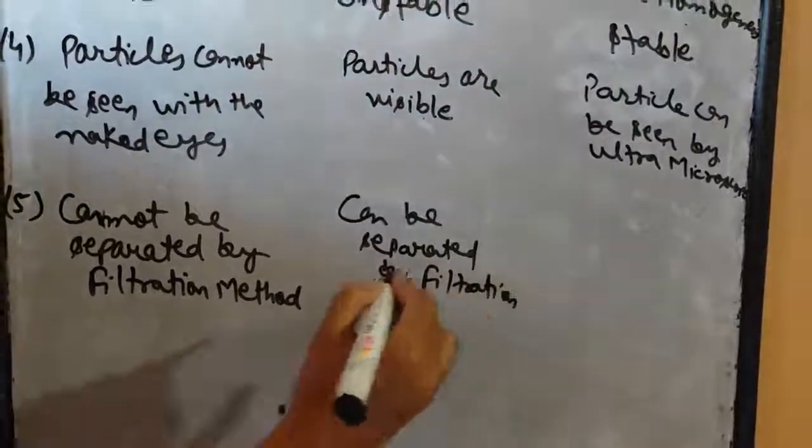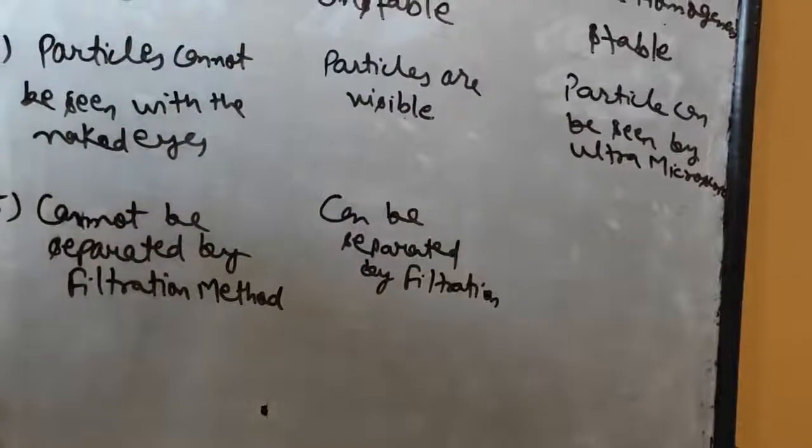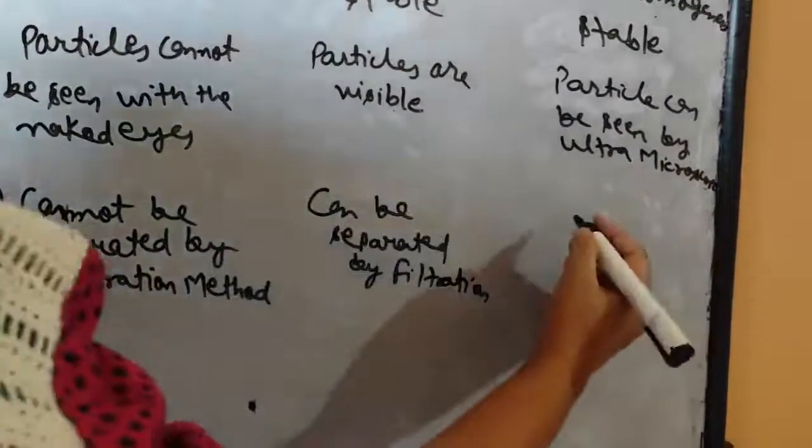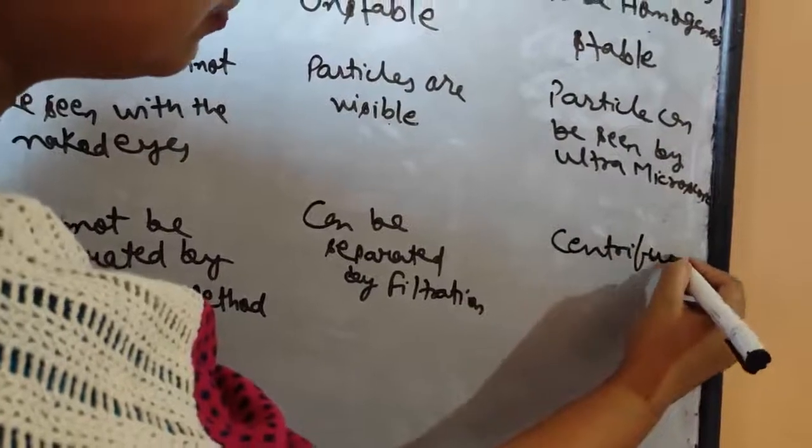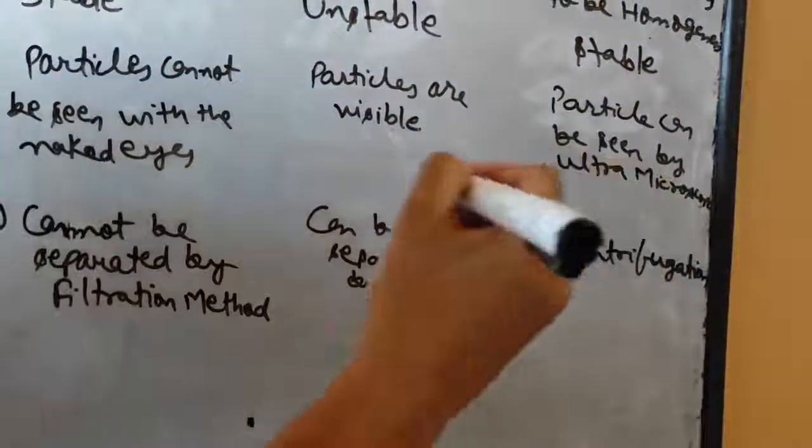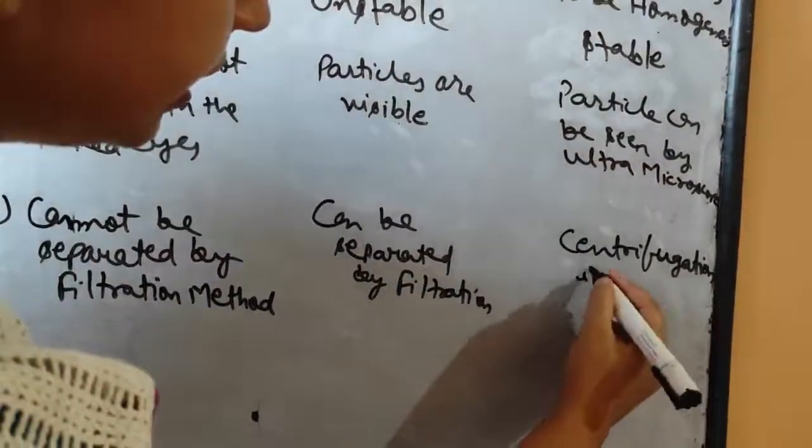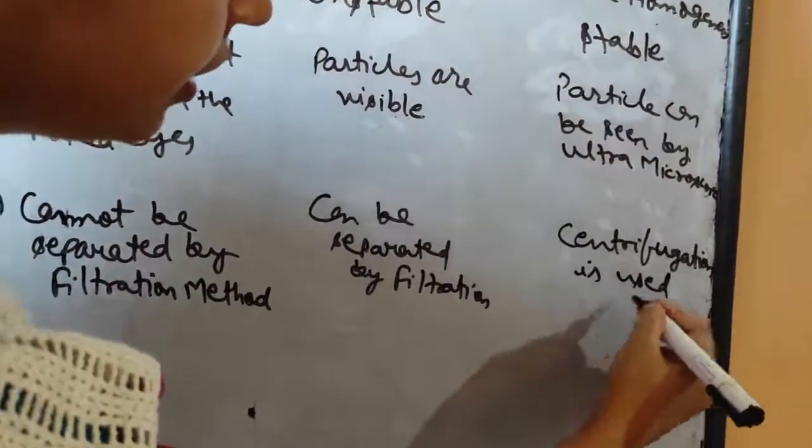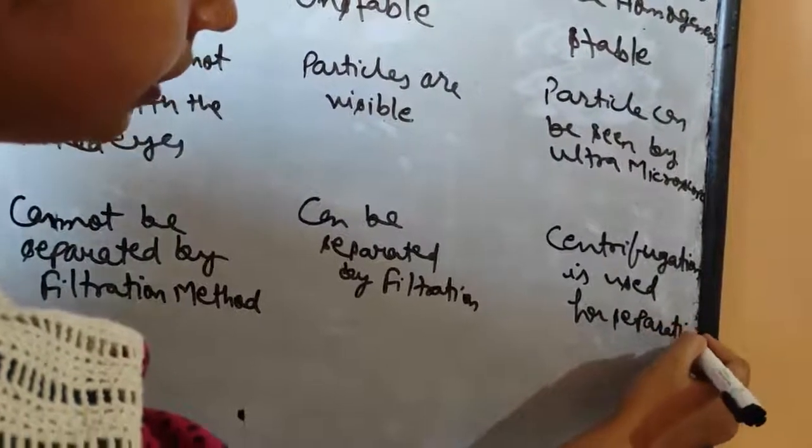Colloids cannot be separated by filtration technique, so we use a special technique here, that is centrifugation. In detail, we will read about centrifugation in the coming lectures. Centrifugation is used for separation of the components.